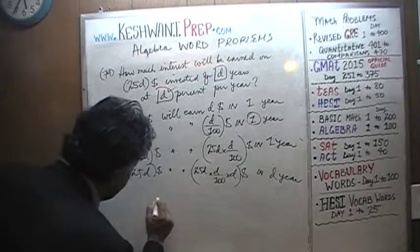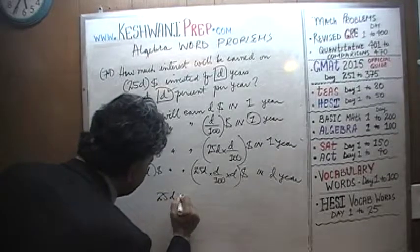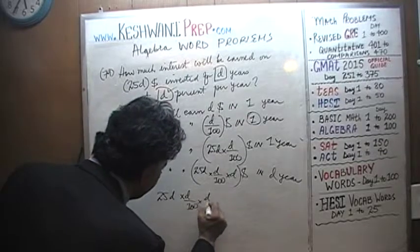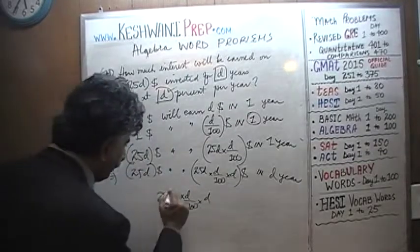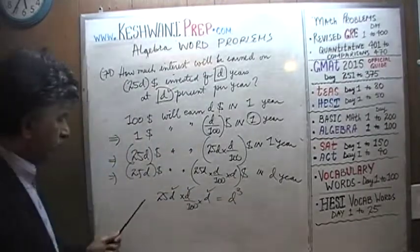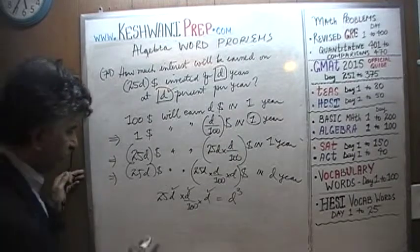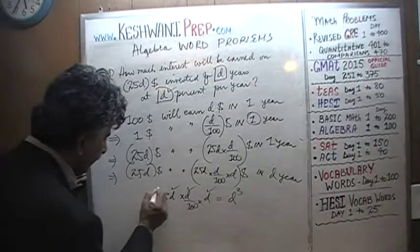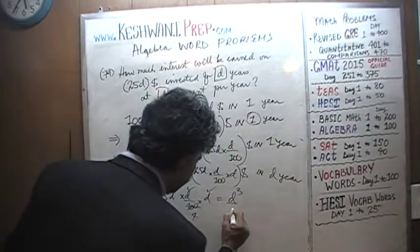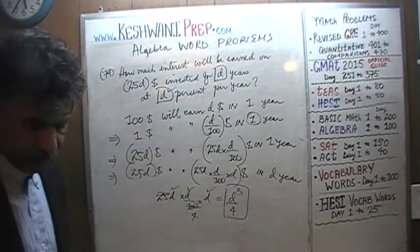We just need to simplify this expression. So we have 25 times D times D over 100 times D. D times D times D is just D cubed, and 25 on top with 100 on the bottom — 25 cancels and 100 becomes 4. There is your final answer.